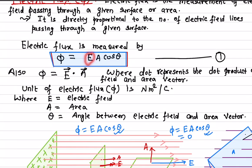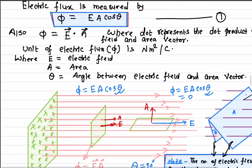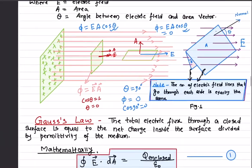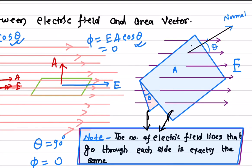The formula for calculating electric flux is: E is the magnitude of the electric field, A is the area, and cosine theta where theta is the angle between the electric field and the area vector. Flux is also defined as the dot product of the electric field vector and the area vector, which is exactly this quantity. The unit of electric flux is newton meter squared per coulomb.